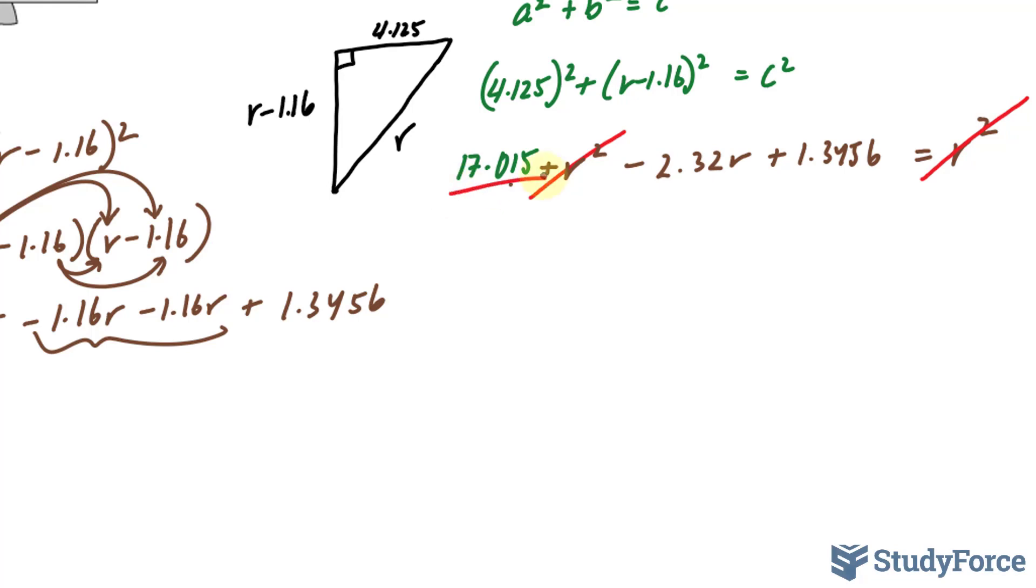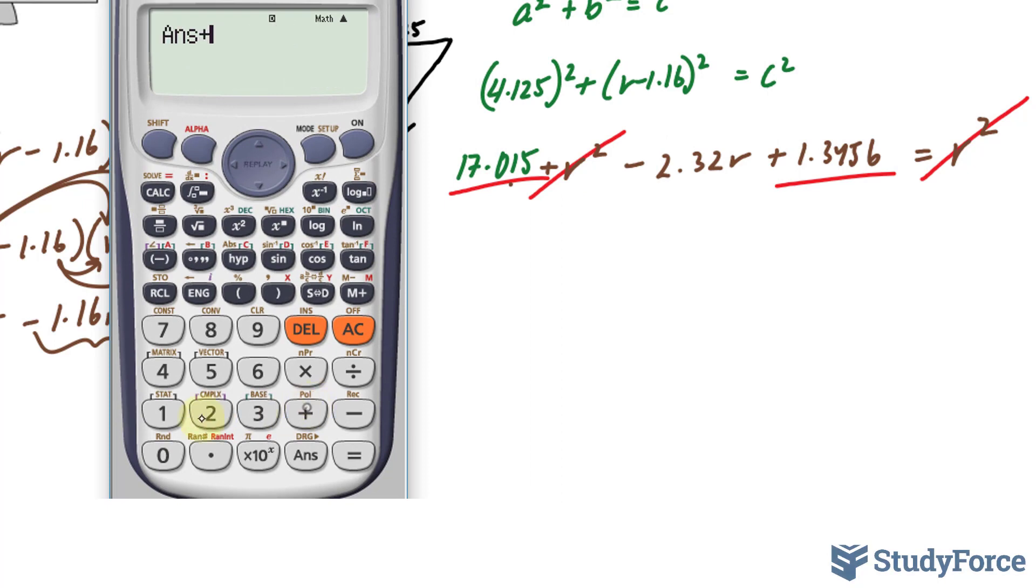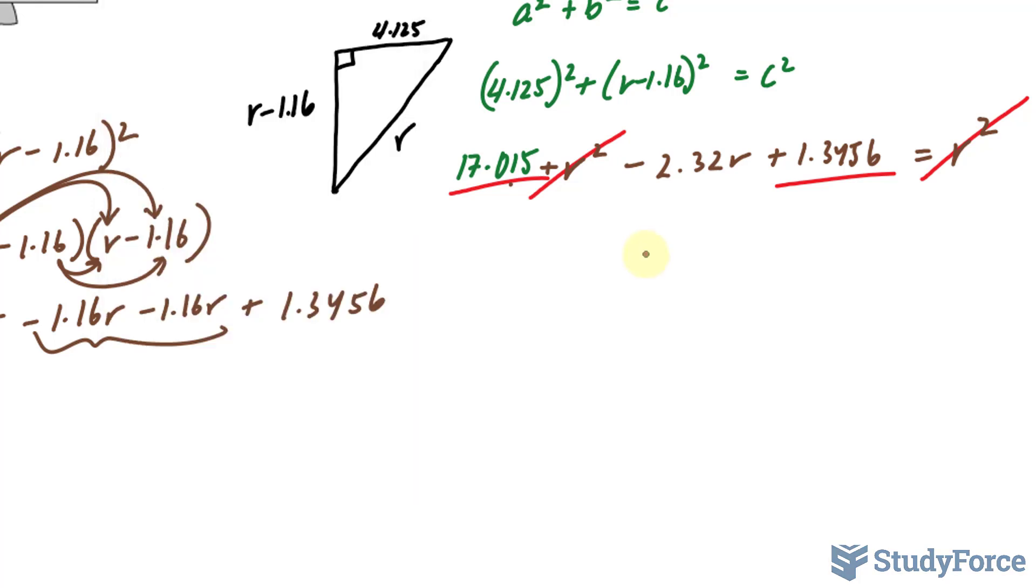And combining this term with this term, because they're like terms, we get the number on your screen plus 17.015, that's 18.36.